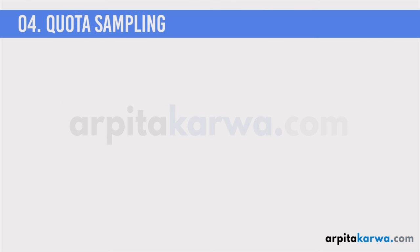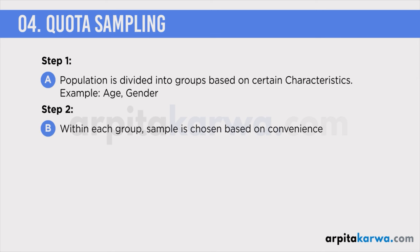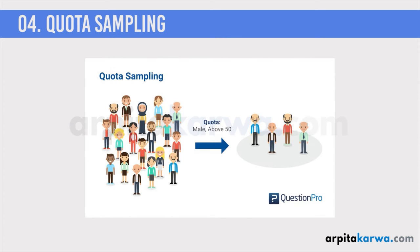Next we have quota sampling. This method is very similar to stratified sampling — if you have not watched the video on stratified sampling please go to the probability sampling video and watch it, because it is only after knowing stratified sampling that you will be able to draw a connection between quota sampling and stratified sampling. In quota sampling the population is divided into groups based on certain characteristics like age or gender. But within each group, in stratified sampling people are chosen randomly, whereas in quota sampling people are chosen in a non-probabilistic way — based on convenience.